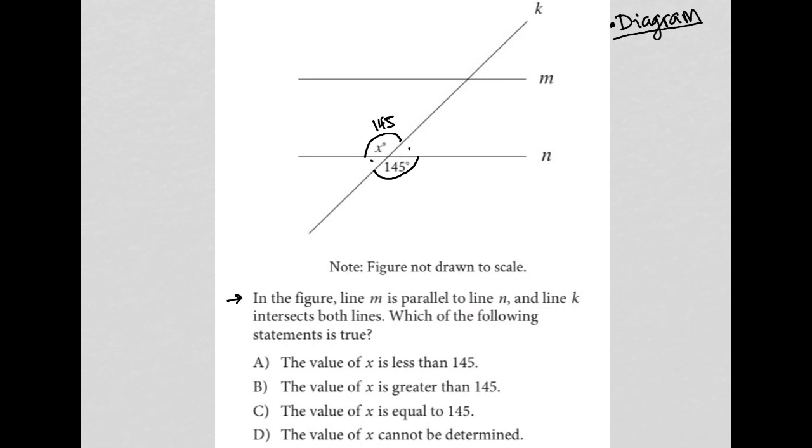So the question says, in the figure, line M is parallel to line N. So I will just draw these little symbols to represent that. And line K intersects both lines. So I was correct in assuming that this is a transversal across two parallel lines.